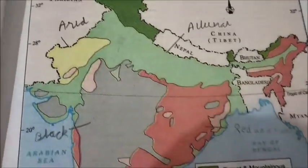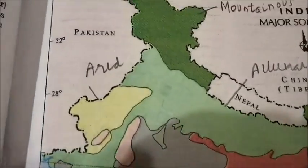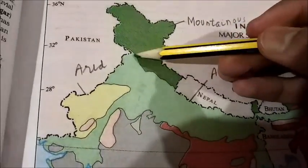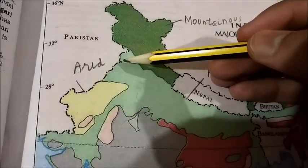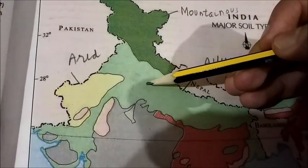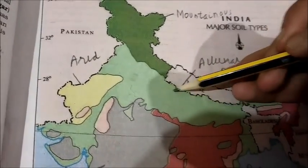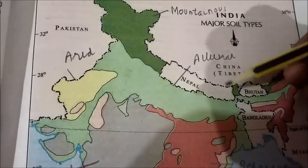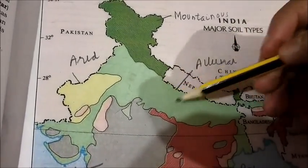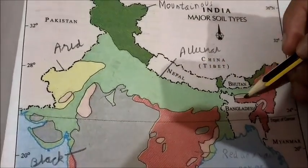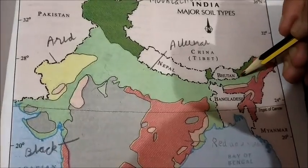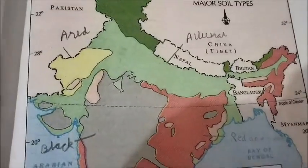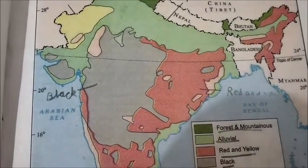Now alluvial soil is located in the northern plains. It extends from Punjab through Uttar Pradesh — mainly Uttar Pradesh — parts of Bihar, crossing Delhi as well, and then parts of the northeast, including parts of Assam, are also covered in alluvial soil.